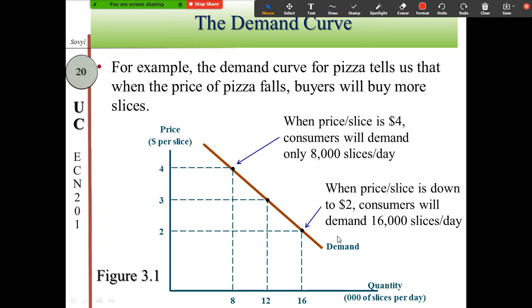If the price continues to go up from three dollars to four dollars per slice, consumers wish to buy even less — from 12,000 down to 8,000 slices per day. This is the demand curve for pizza from the textbook.